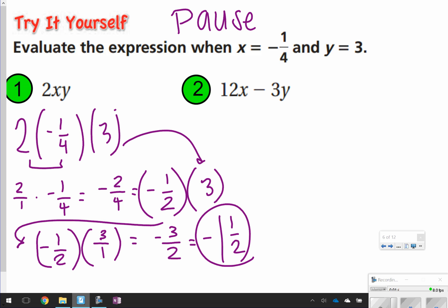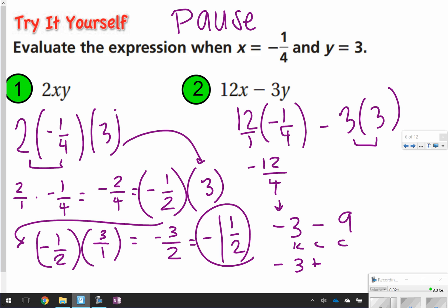Same thing over here for number 2, plugging in your numbers. 12 times negative 1 fourth minus 3 times 3. 12 times negative 1 fourth, that's going to be 12 over 1 times negative 1 over 4. That's going to give us negative 12 over 4, which is equal to negative 3. So negative 3 minus, and then 3 times 3 is 9. Remember, with our subtraction problems, we're going to do keep, change, change. So negative 3 plus negative 9 is going to give us negative 12. How did you do?